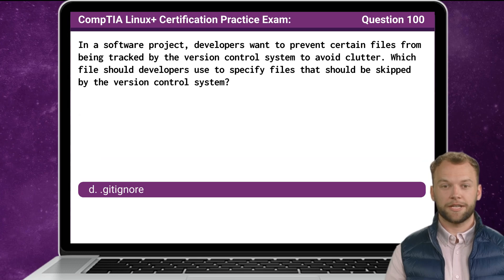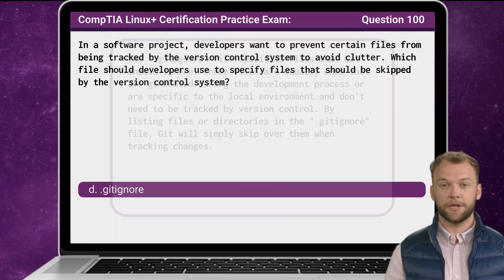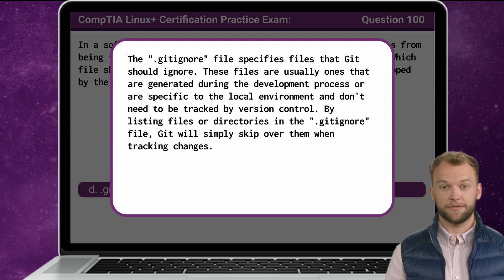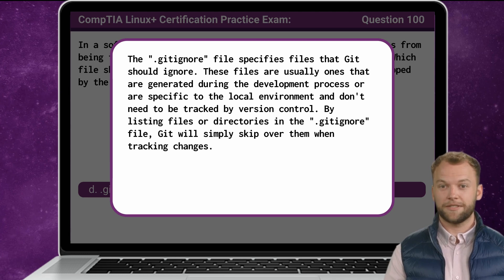The answer is D: .gitignore. The .gitignore file specifies files that git should ignore. These files are usually ones that are generated during the development process or are specific to the local environment and don't need to be tracked by version control. By listing files or directories in the .gitignore file, git will simply skip over them when tracking changes.